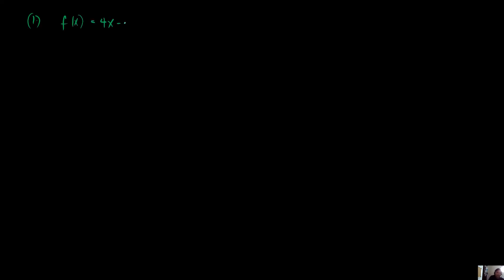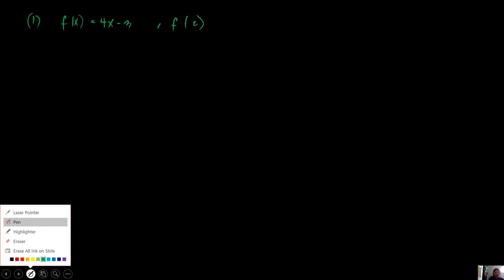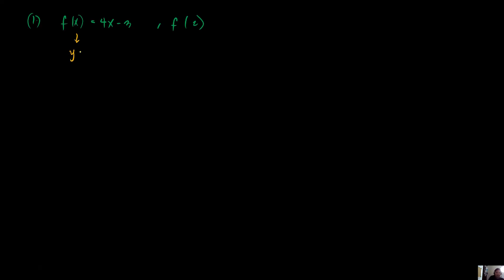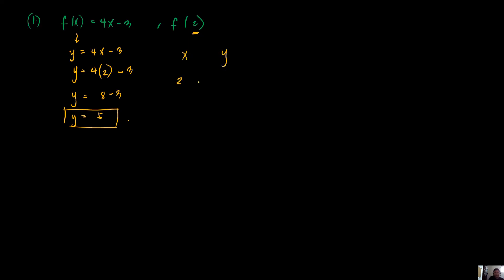We have f of x is equal to 4x minus 3, where the value of x is equal to 2. All you have to do is transform this into y is equal to 4x minus 3, then substitute the value of x: y is equal to 4 times 2 minus 3. Evaluate: 4 times 2 is 8, minus 3 gives us 5. y is equal to 5. So if we input 2, our output is 5, given the function f of x equals 4x minus 3.